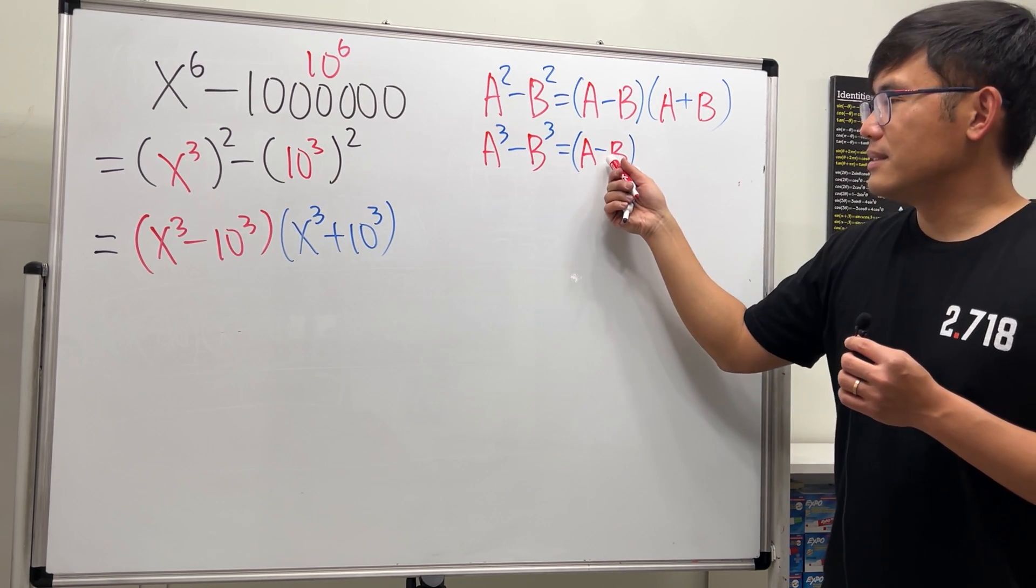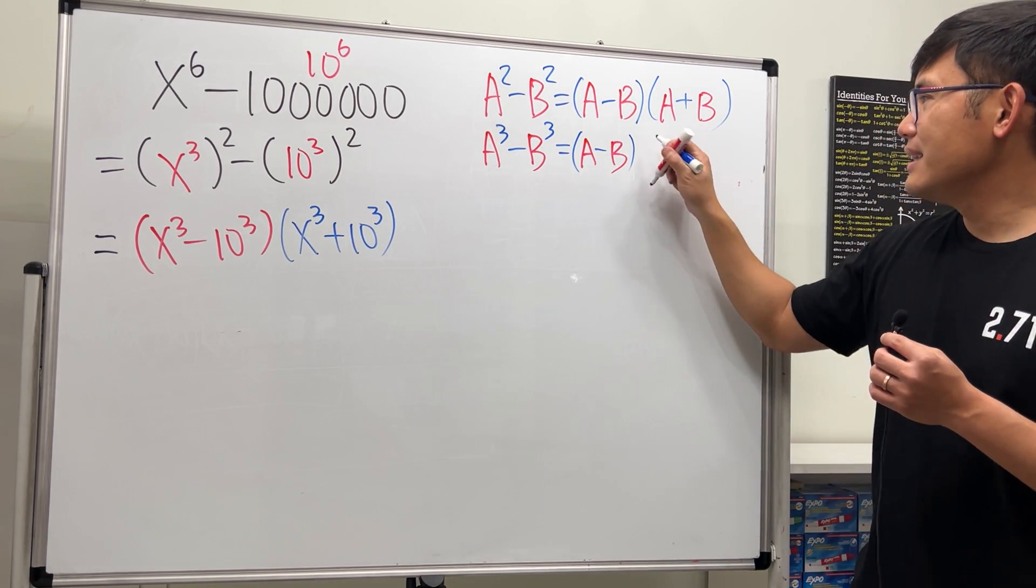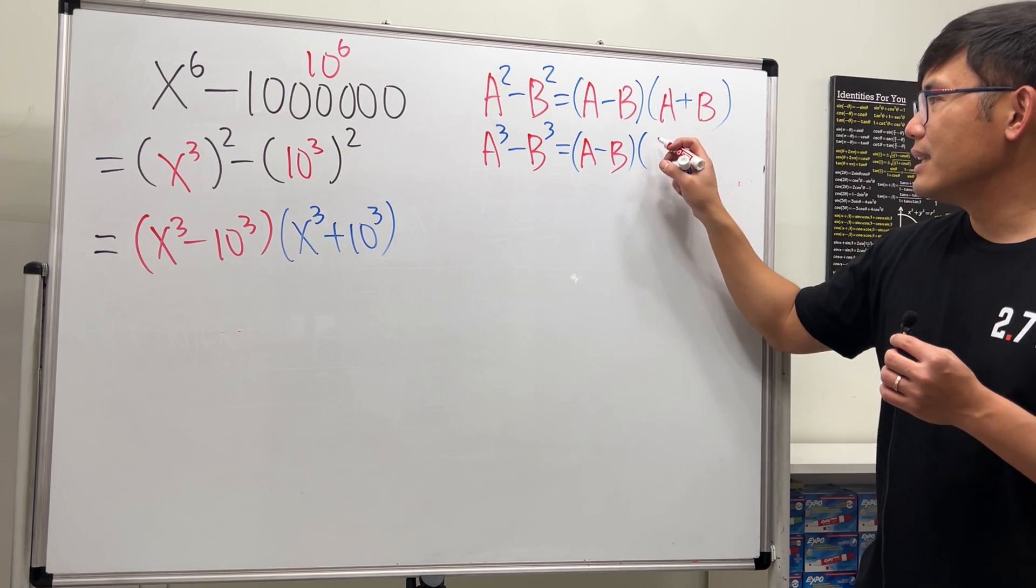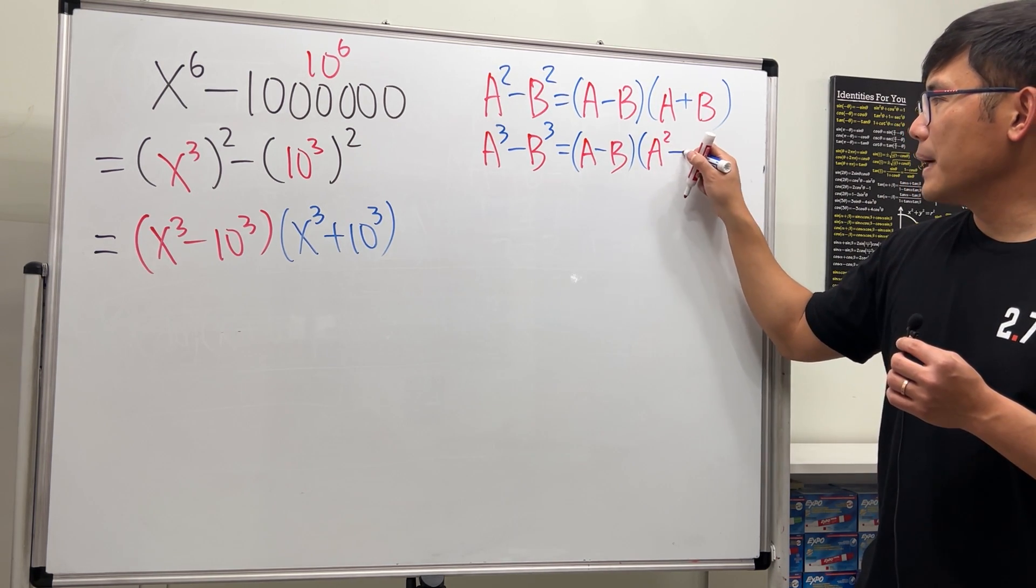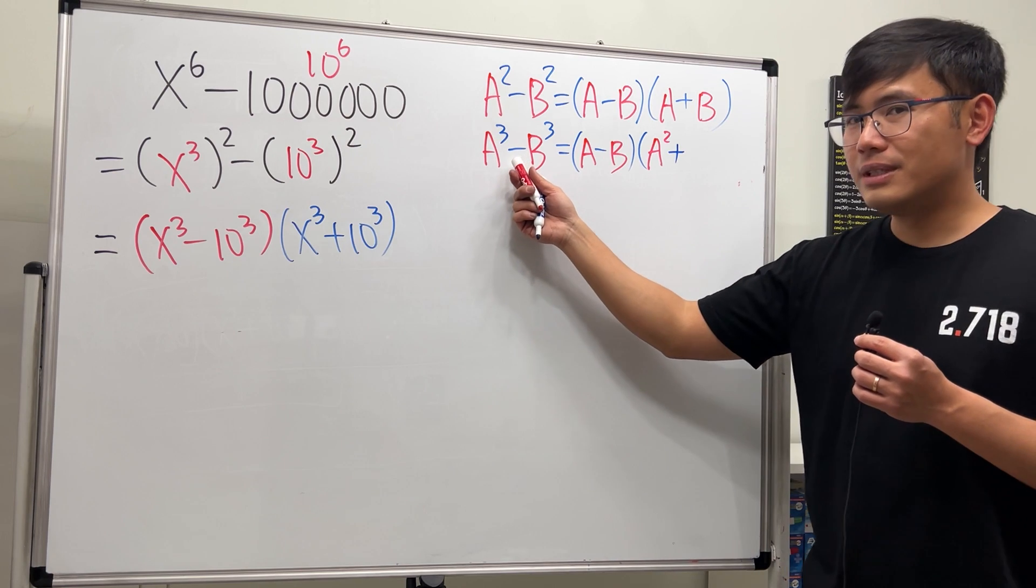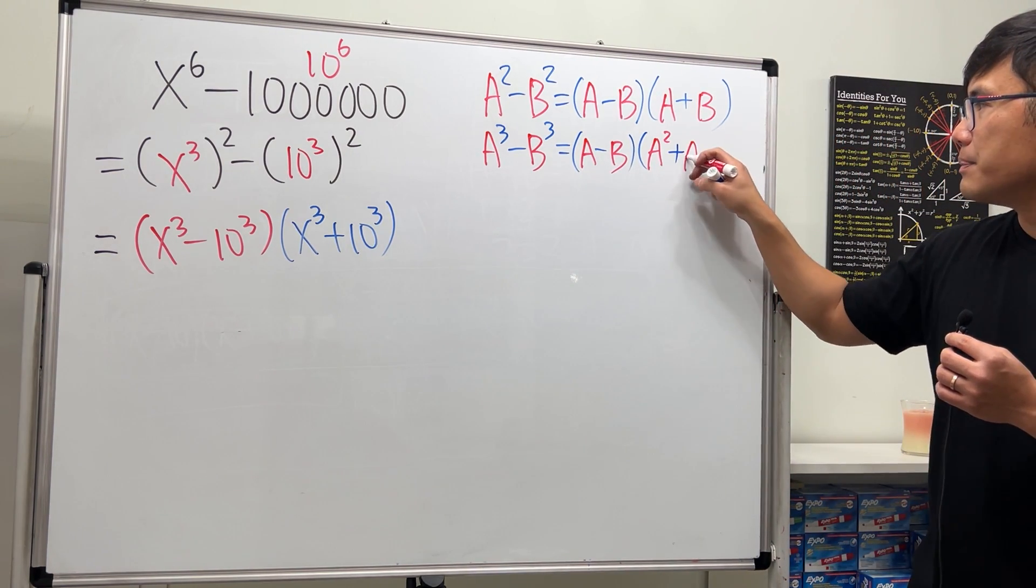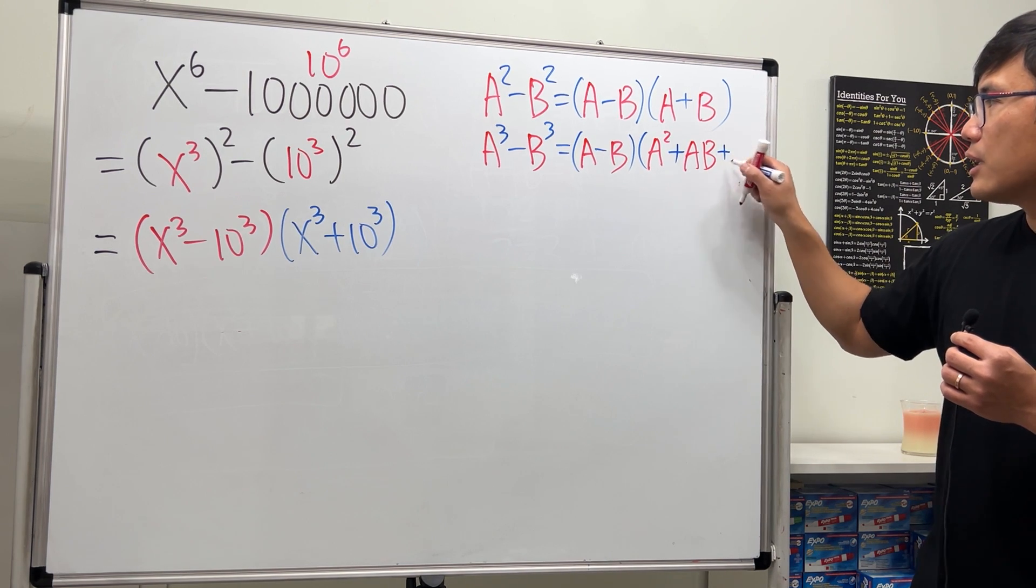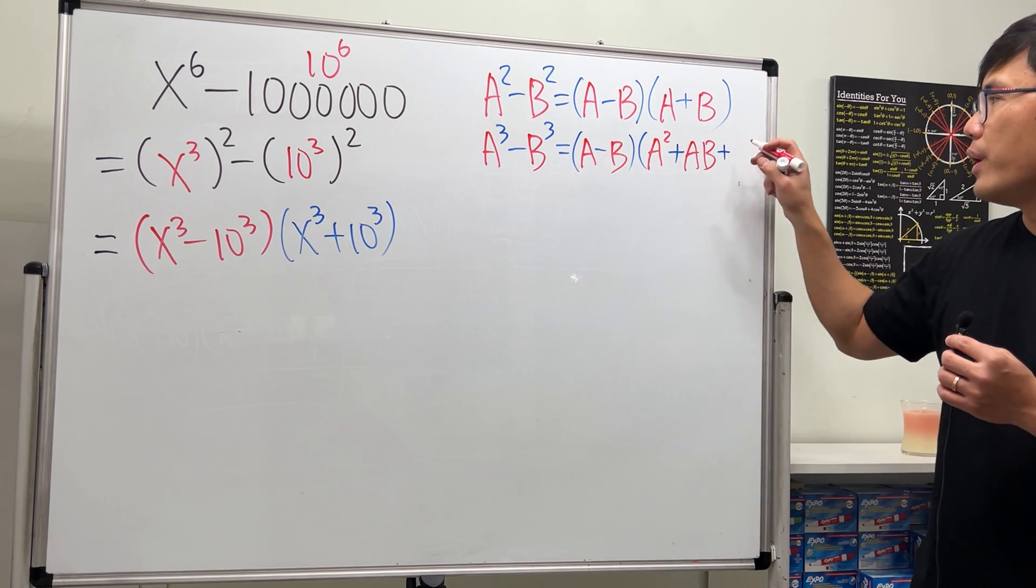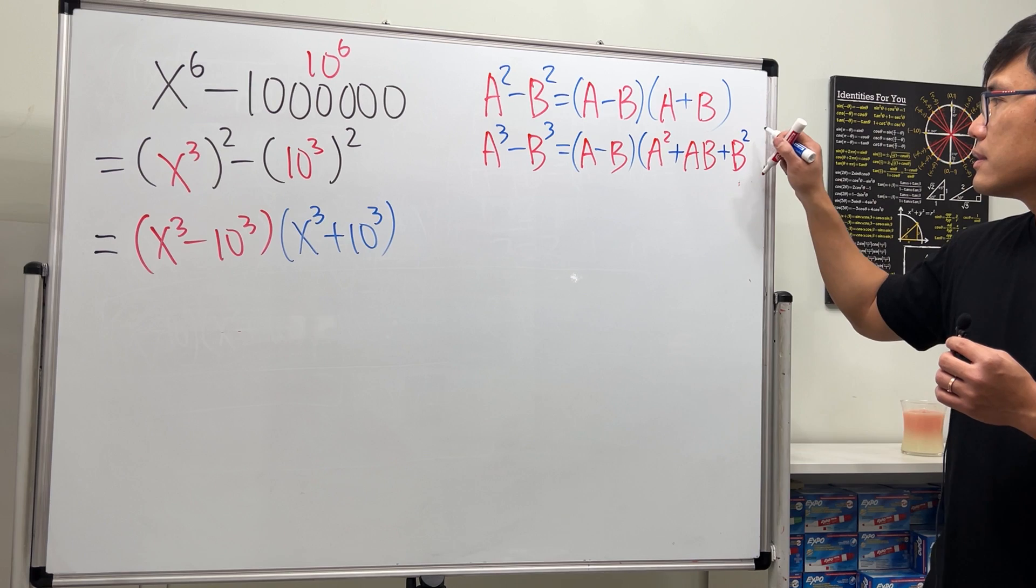So, the sign is still the same, right? And then, next, this right here is a square plus, so remember, this right here is minus minus plus, and then here we have a times b, and lastly, it's always plus b square. Like this.